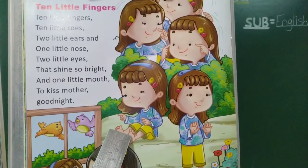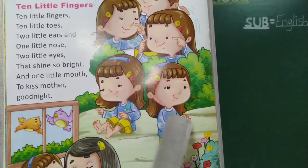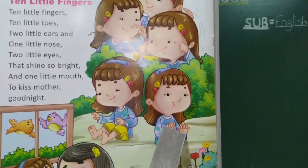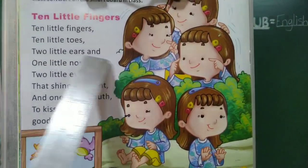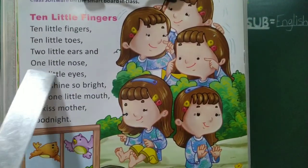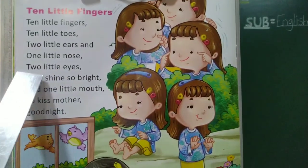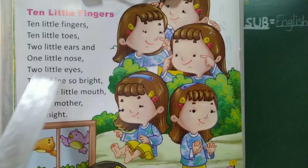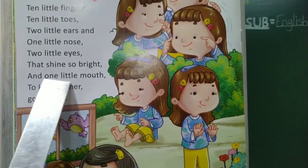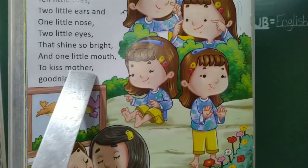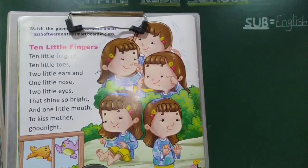Toes means the fingers on your feet. And fingers means the fingers on your hands. Two little ears and one little nose. Two little eyes that shine so bright, and one little mouth to kiss — Mother goodnight.